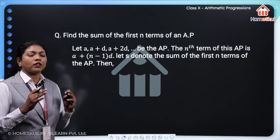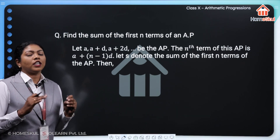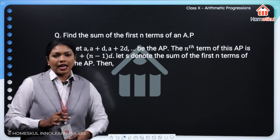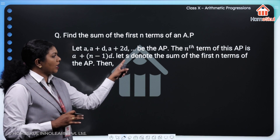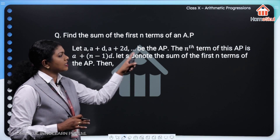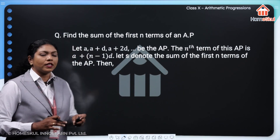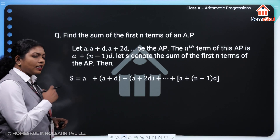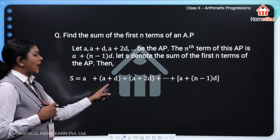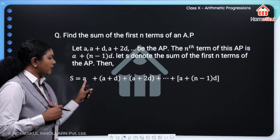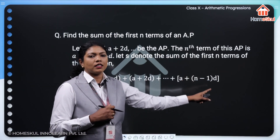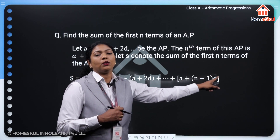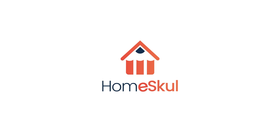Suppose there are N terms in this AP. We need to find the sum of all these terms. Let S denote the sum of the first N terms of this AP. As in the earlier case, we add each term from the first term to the Nth term, where the Nth term is A plus (N minus 1) times D.